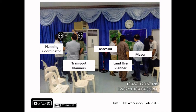Step one of the comprehensive land use planning process is to organize the team. In this photo, you can see three city officials who have been coordinated with the planning coordinator, the mayor, and the city assessor. These people were chosen because of their important roles in the municipal government.